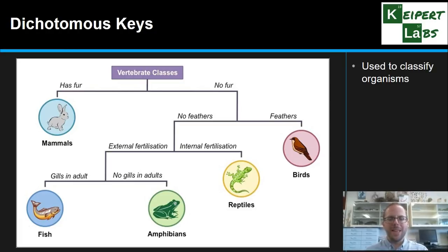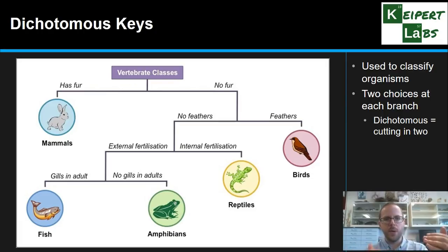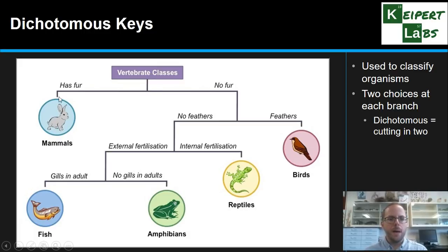The idea is that we're classifying organisms using a key, presenting it as a diagram or a system where we have two choices at each stage. Different answers — whether we answer one way or the other — allow us to sort based on those characteristics. Dichotomous is Greek for 'cutting in two.' At each point we've got an option or question and it splits into two at different stages, and as we go further down the diagram we end up separating or distinguishing all these things from each other.